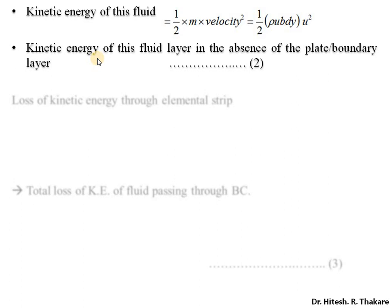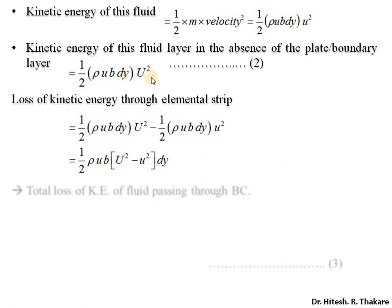If there was no boundary layer, the kinetic energy would be calculated for the same mass flow rate but with the free stream velocity U, giving (1/2)·rho·u·b·dy·U². Note that this uses capital U squared, while the boundary layer case uses small u squared. In both cases the mass is the same, but kinetic energy changes because of the change in velocity only. So the loss in kinetic energy is (1/2)·rho·b·(U² − u²)·dy.